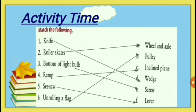Now it's time for Activity 1: Match the Following. On the left-hand side are examples of simple machines and on the right-hand side are the simple machines. First, a knife is used to split things apart, so it is an example of a wedge. Second, roller skates have wheels, so they are an example of wheel and axle. Third, the bottom of a light bulb looks like a screw, so it is an example of a screw. Fourth, a ramp is higher from one end and lower from the other, so it is an example of an inclined plane. Fifth, the seesaw is an example of a Class 1 lever. Sixth, the hoisting of a flag is an example of a pulley.